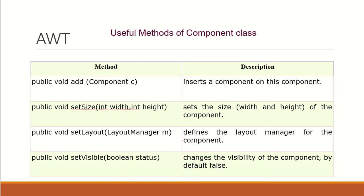These are some methods available in the component class which are also inherited by the subclasses. There is a component add method - as the name says, it is used to add a component and it accepts an argument of type component. Then you can set the size of a component, set the layout of your container, and set whether a particular container can be made visible or not. These are the most commonly used methods while dealing with AWT.